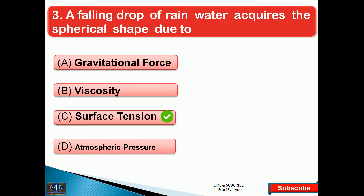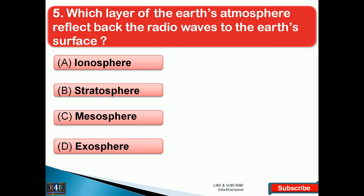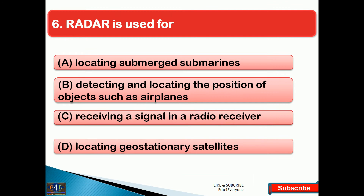It is more difficult to walk on a sandy road than on a concrete road because — the right answer is option C. The reason is the friction between sand and feet is less than that between concrete and feet. Next question: which layer of the earth's atmosphere reflects back the radio waves to the earth's surface? The right answer is option B, that is stratosphere. Radar is used for — the right answer is option B, that is detecting and locating the position of objects such as airplanes.